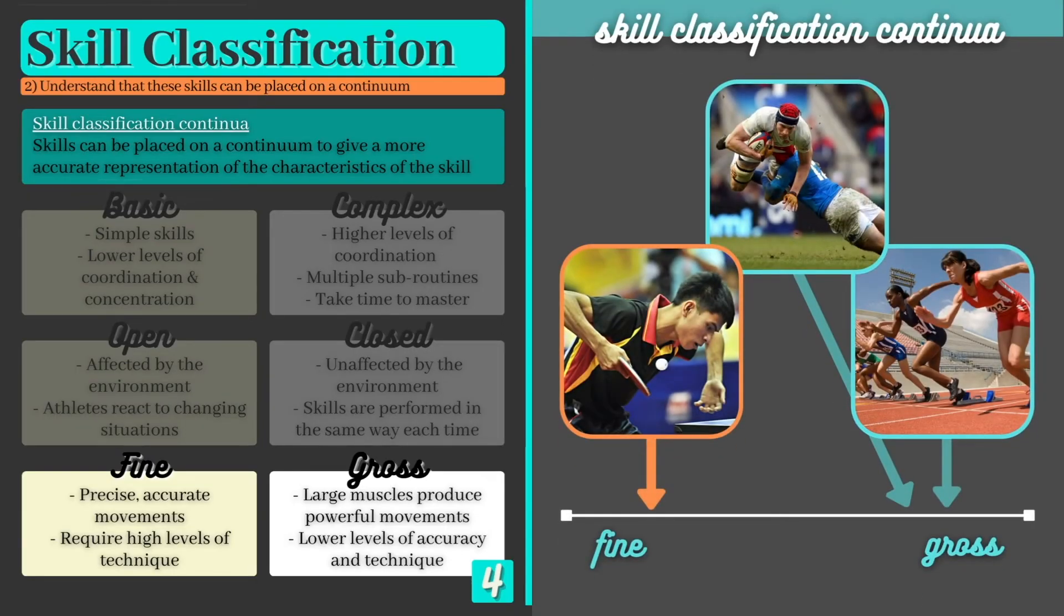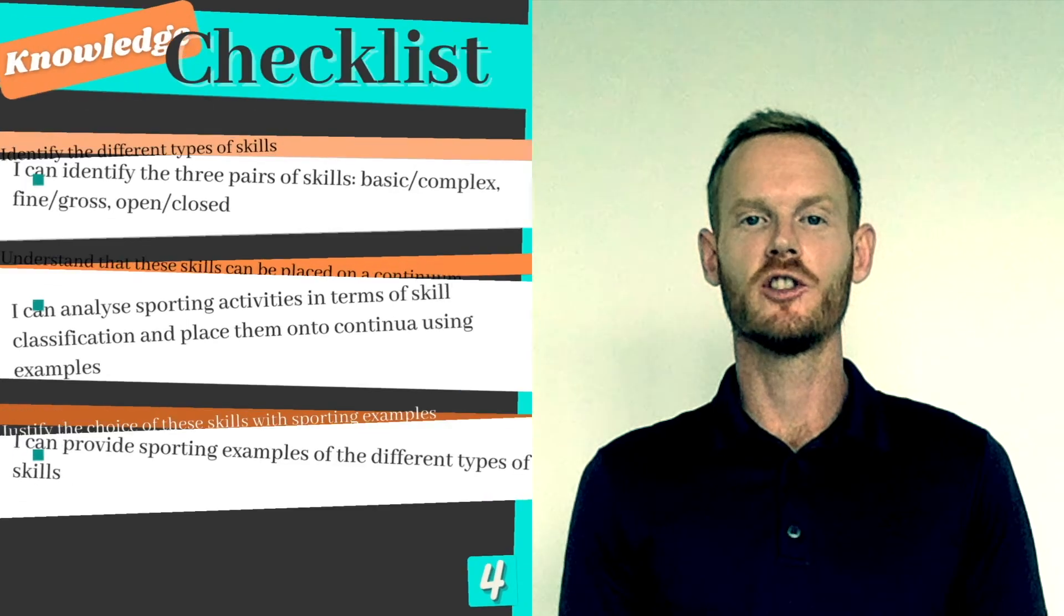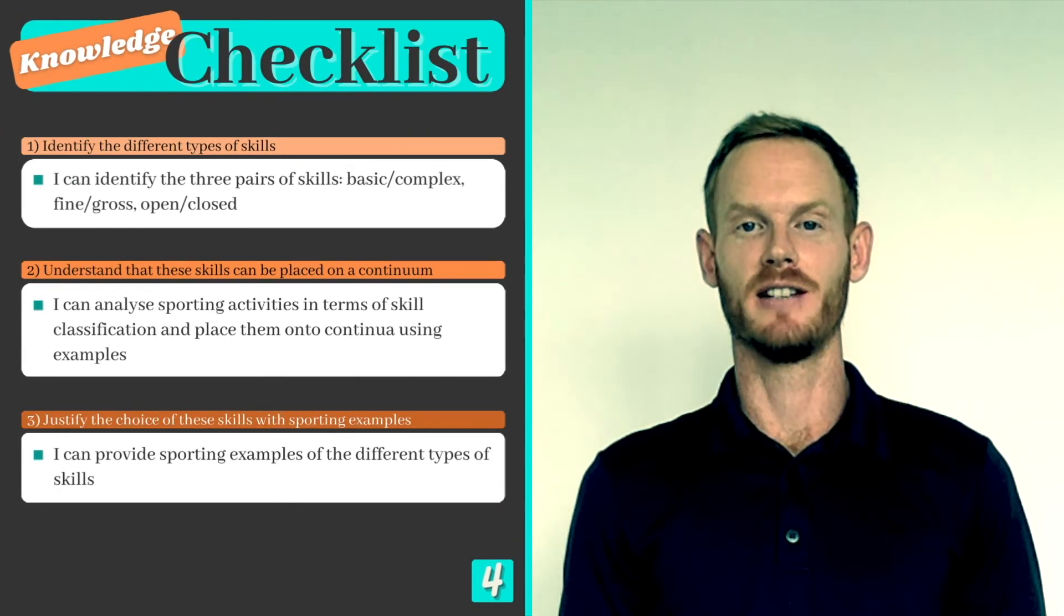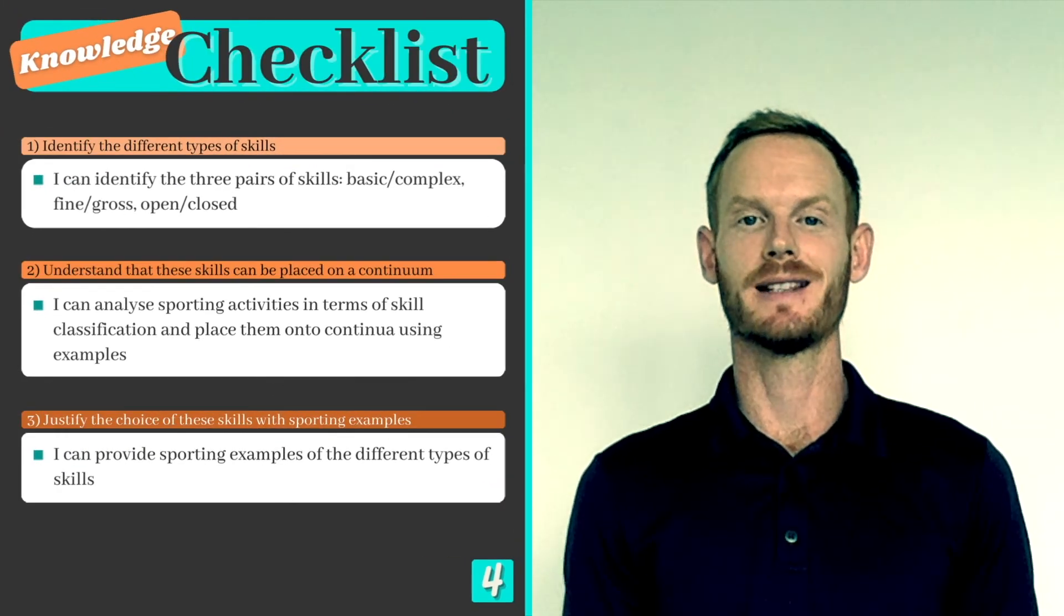Finally, we have a table tennis serve which is largely fine. Spin serves require high levels of accuracy and technique and small muscle groups are used to produce precise movements in the fingers and wrists. Now we've just covered absolutely everything you need to know on topic 8.3 skill classification.